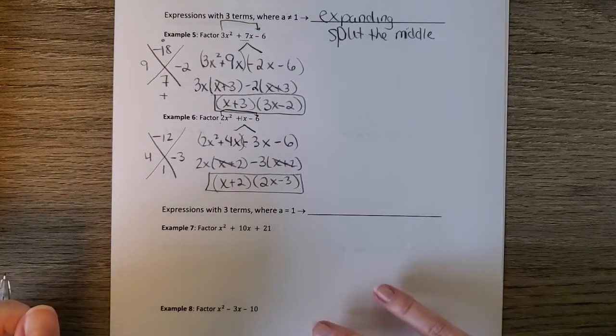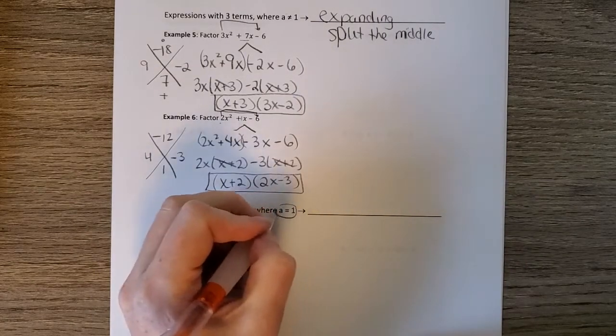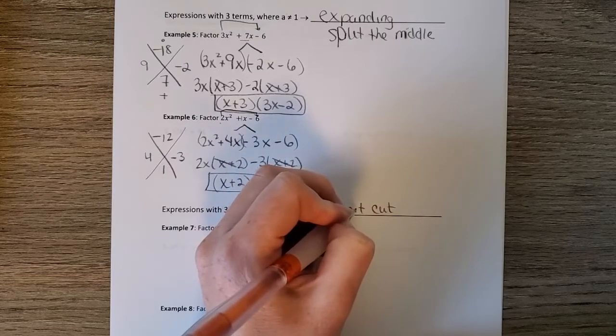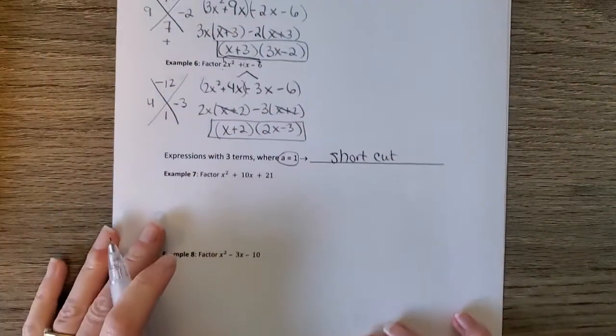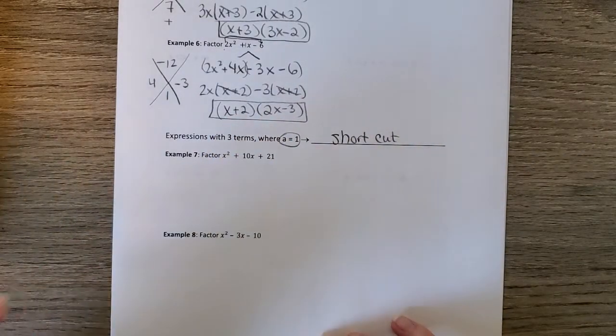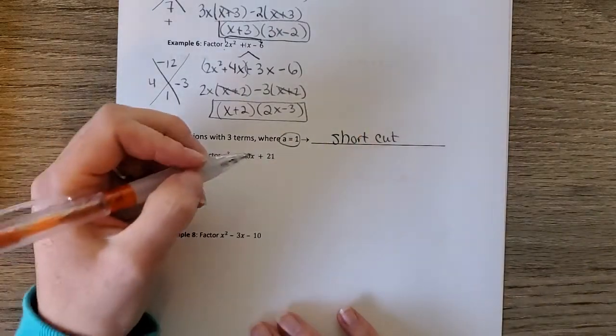So that was factoring with splitting the middle. And then the last time, if a is equal to 1, and only if it's equal to 1, you can use a shortcut. I always find students that learn the shortcut, and then they use it every time, even when they can't. And then you get the wrong answer. So one thing is always make sure you check your answers to make sure they work. You check your factors. But always make sure you can only use a shortcut if a is 1.